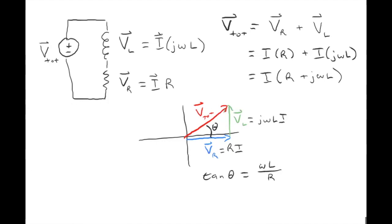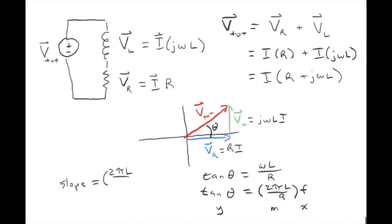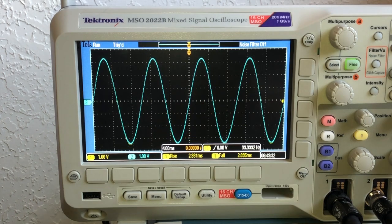So we can measure the angle and the frequency. Rewriting: tan(θ) = (2π·L / R) · f, since ω = 2π·f. After making a bunch of measurements, I can plot this — the y-axis is tan(θ), the x-axis is frequency, and the slope is 2π·L/R. So if we measure R with our multimeter and get the slope of the line, we can determine the inductance from the slope of our plot.